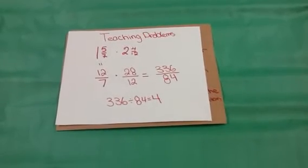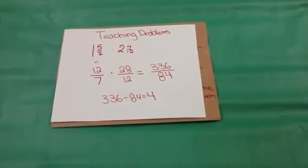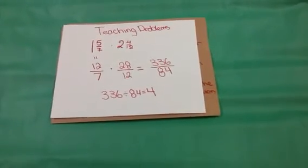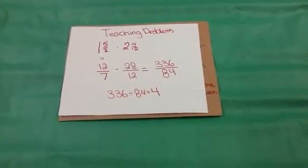First, you turn them into improper fractions. 12 over 7 times 28 over 12 which equals 336 over 84.